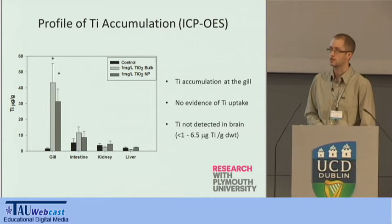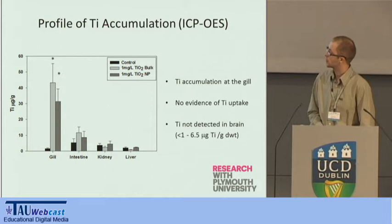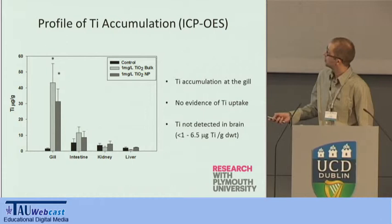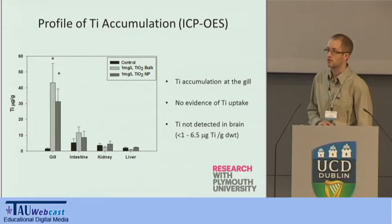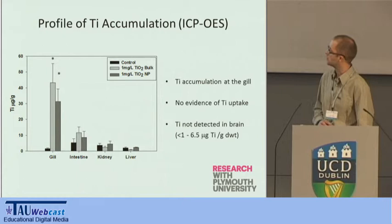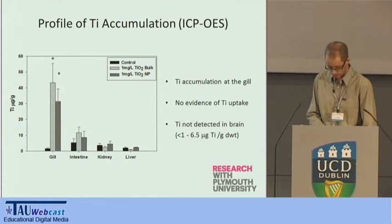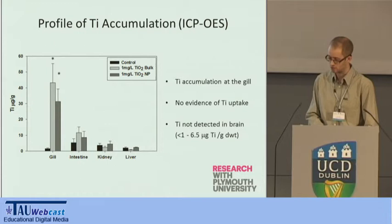This is the profile of titanium accumulation in various tissues of the fish — the titanium expected to be present as titanium dioxide. We observed accumulation of both the bulk material and the nanoparticle at the gills of these fish compared to the controls. We didn't see any accumulation in the intestines — not feeding the fish perhaps prevented dual exposure routes. There was no accumulation in the kidney or liver, and titanium wasn't consistently detected in the brain. These fish were exposed to quite high concentrations of titanium, and it seemed to accumulate at the gill.